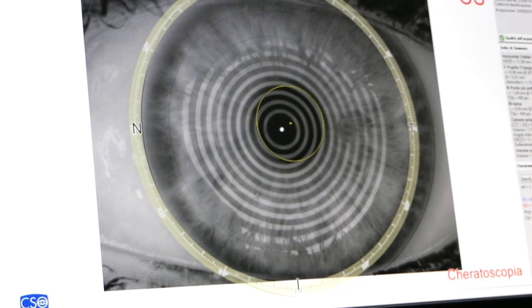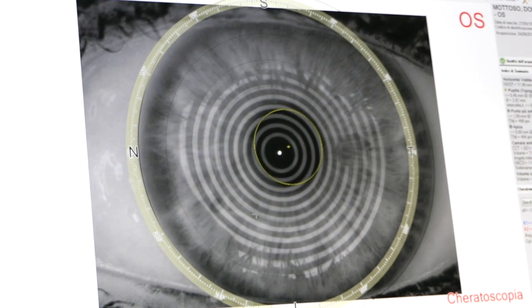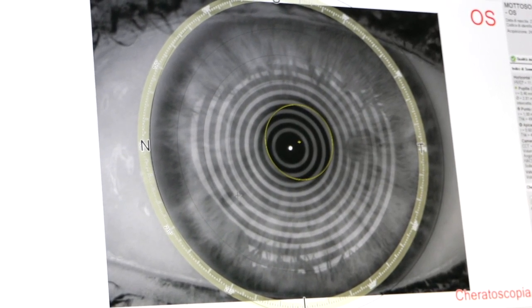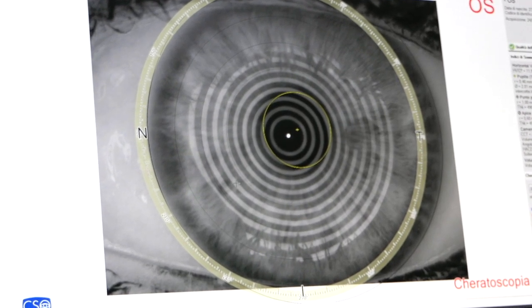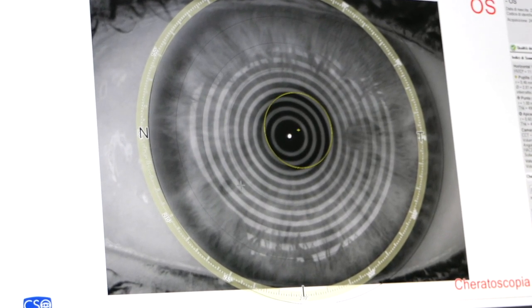The larger the reflected circles are, the more the cornea is flat. This is the principle on which the Placidus disk is based.